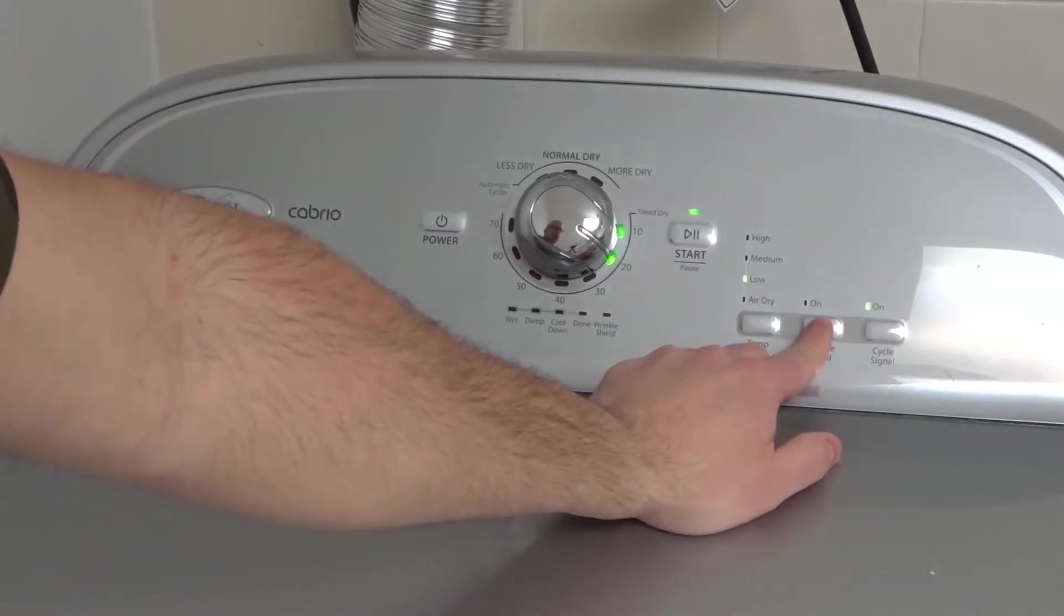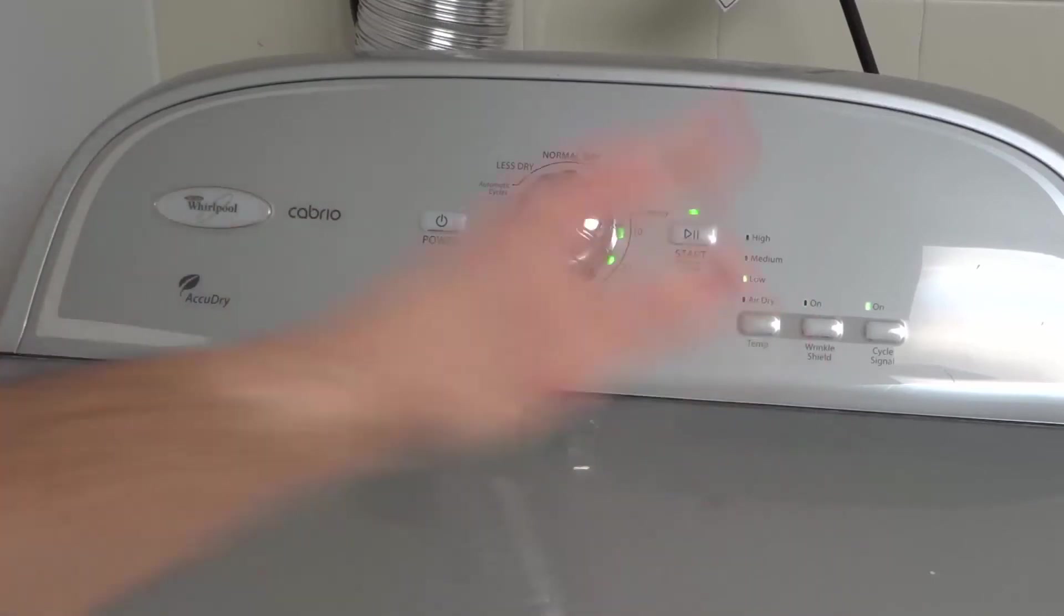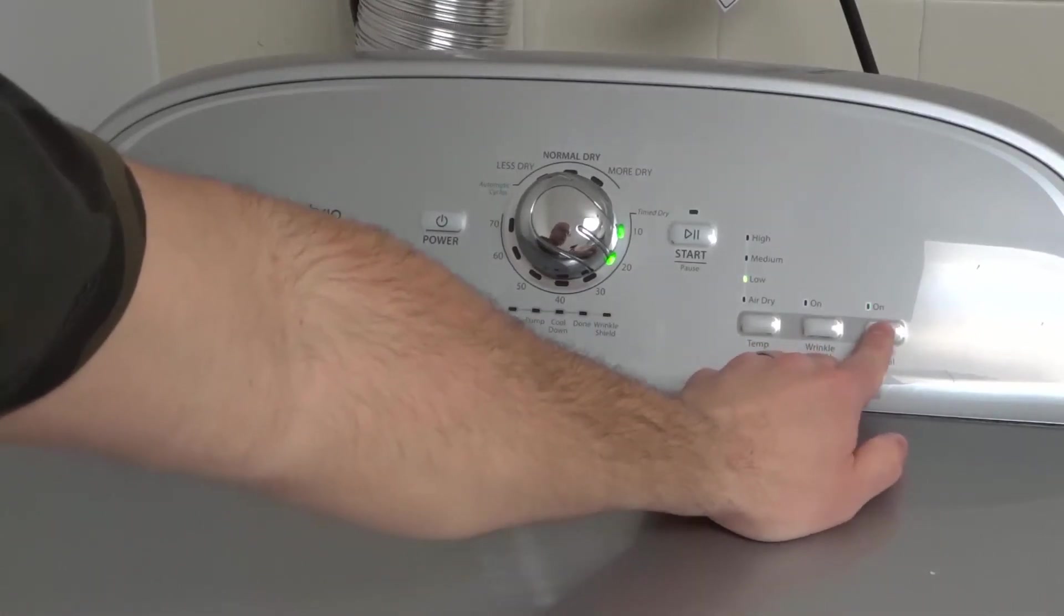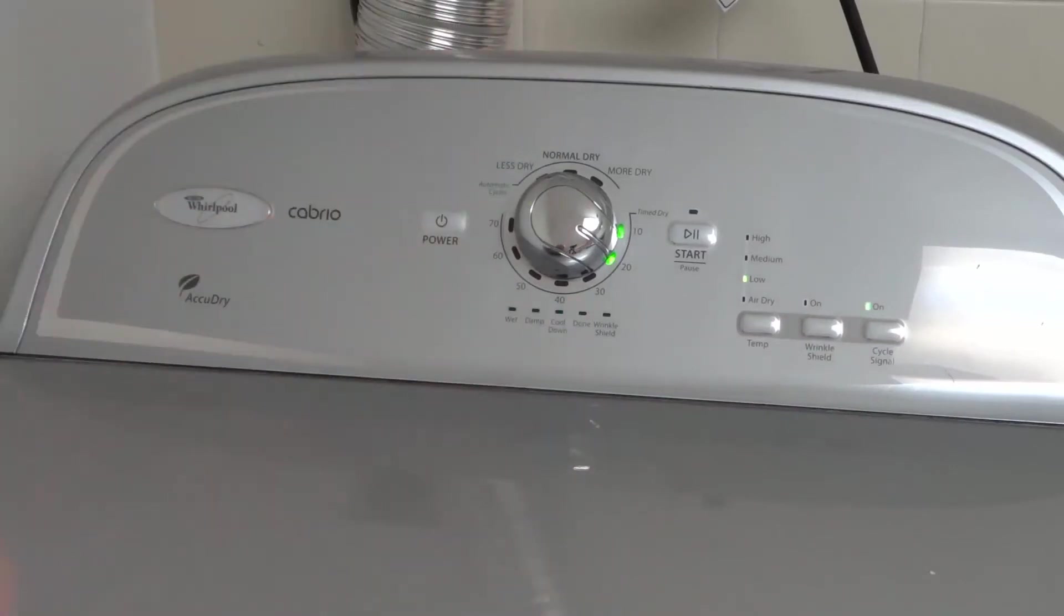You also can turn on your wrinkle shield or off. That's going to prevent your clothes from getting wrinkled once the cycle has finished. And you can also turn your cycle signal on or off. If it's on, it's going to let you know when it's finished. If it's off, it's not going to let you know when it's finished.